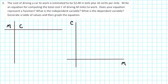The cost of driving a car to work is estimated to be $2 in tolls plus $0.32 per mile. Write an equation for computing the total cost, C, of driving m miles to work. Does your equation represent a function? What is the independent variable? What is the dependent variable? Generate a table of values and then graph the equation.